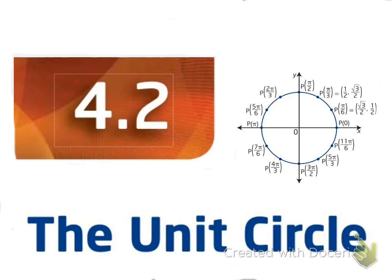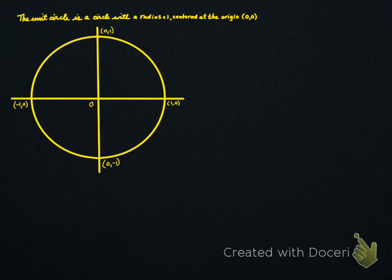Today we're going to do topic 4.2 in Math 30-1. It's called the unit circle. The unit circle is a circle with a radius of 1 centered at the origin (0, 0). Here's what it looks like.